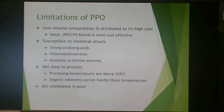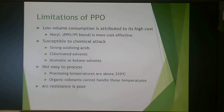PPO is a very low-volume material because it's very expensive. Noryl is a blend of polystyrene and PPO, which makes it more cost-effective. PPO is susceptible to chemical attack from strong acids, chlorinated solvents, and aromatic or ketone solvents. It is not easy to process — processing temperatures are above 310°C, and organic colorants cannot handle these temperatures, so PPO only comes in black. It also has poor arc resistance.